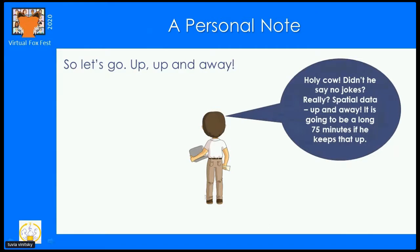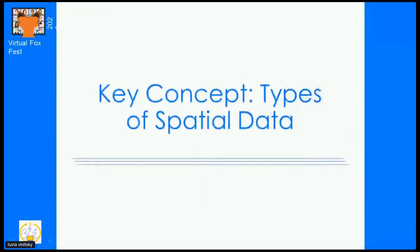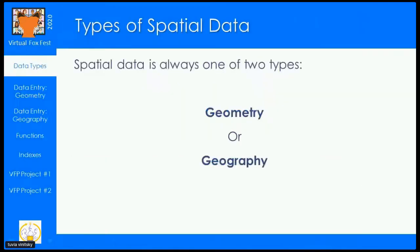We'll be getting a hand today from our old friend Spatial Sam, copyright illustrator Nessie Schiff, the greatest illustrator in the world. Spatial Sam is our virtual assistant for today. Let's start off with learning the types of spatial data and defining what we're talking about. Spatial data is always one of two types: geometry or geography. Every piece of spatial data is one of these two — it can't be both, and it can't be neither.